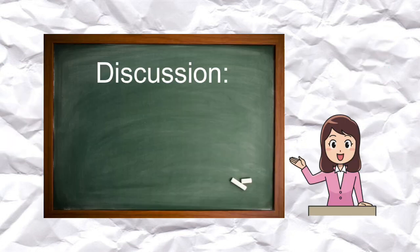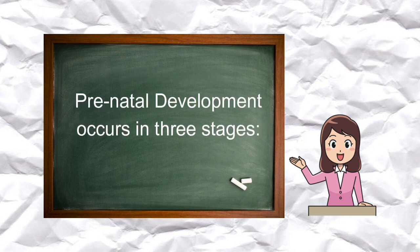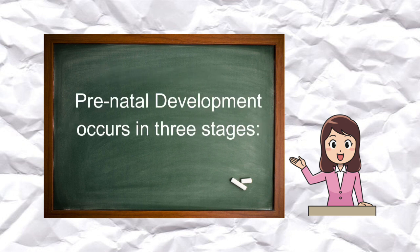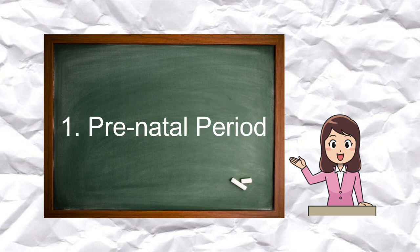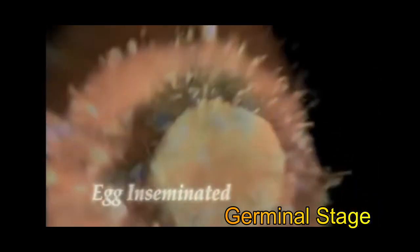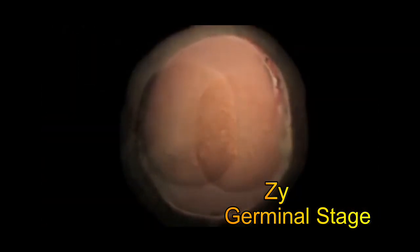Moving forward, let me discuss the eight stages of development. The process of prenatal development occurs in three main stages. The first one is the prenatal period. This is development before birth and takes place in three stages. The germinal stage begins at conception, when the sperm and egg cells unite in one of the two fallopian tubes. The fertilized egg is called the zygote.